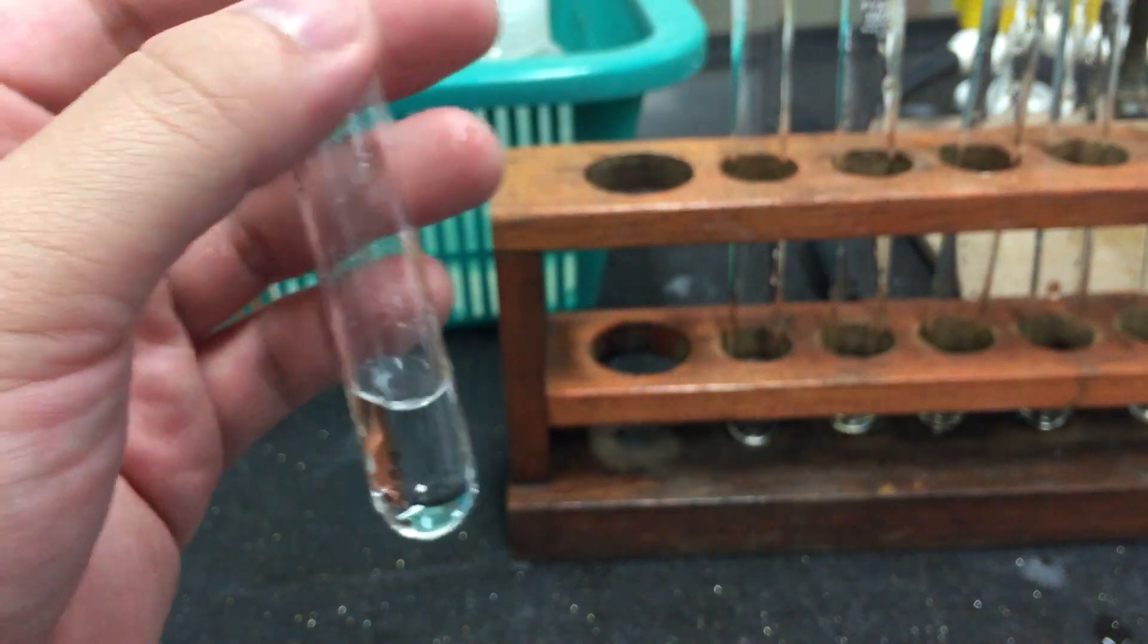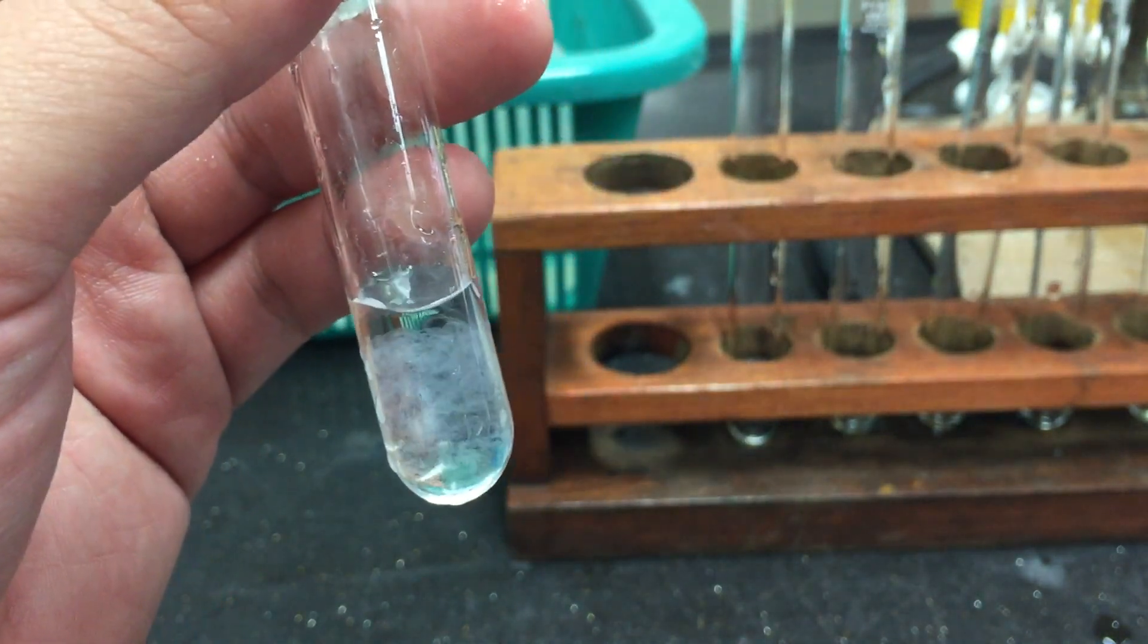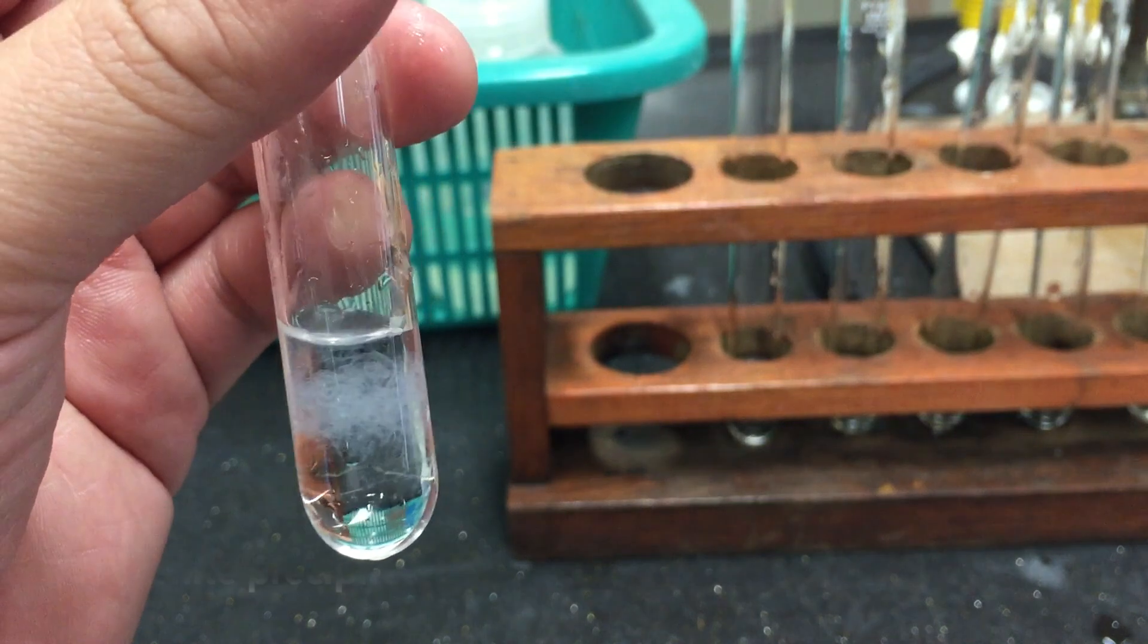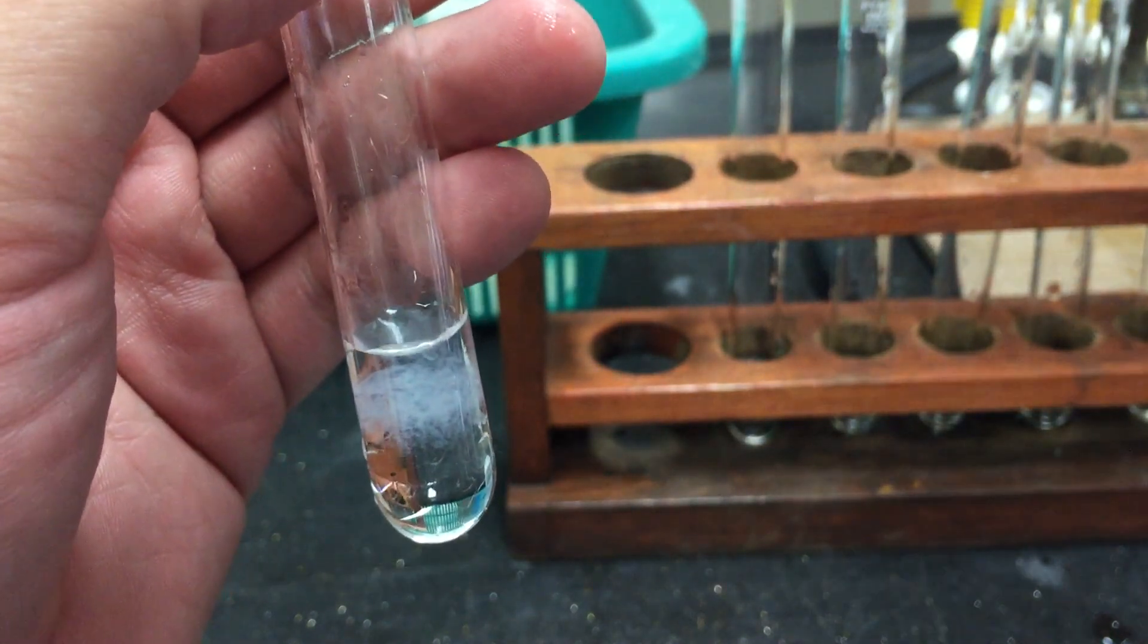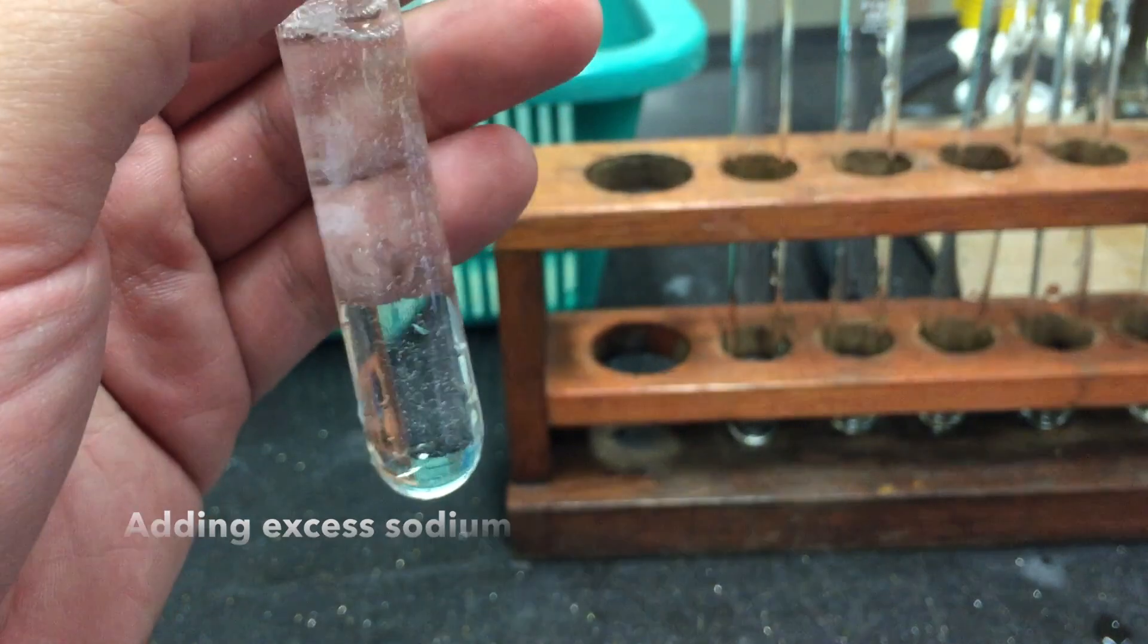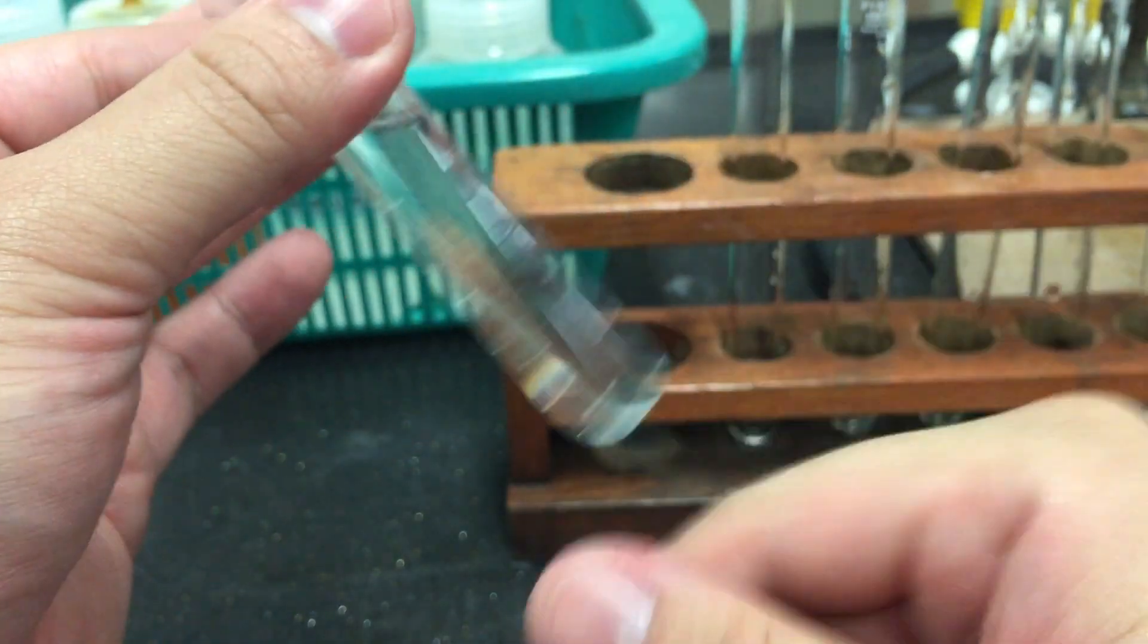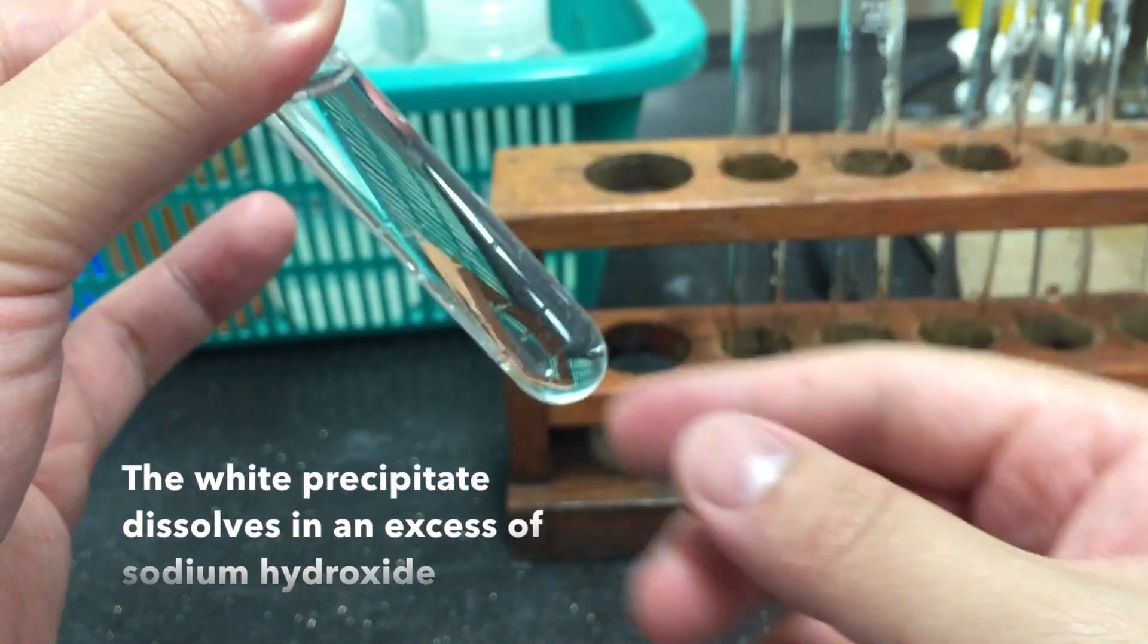To a small sample of your solution, add a few drops of sodium hydroxide. Notice a white precipitate forms. Proceed to add excess sodium hydroxide. Notice how the white precipitate dissolves in an excess of sodium hydroxide.